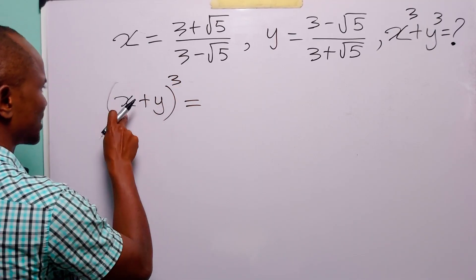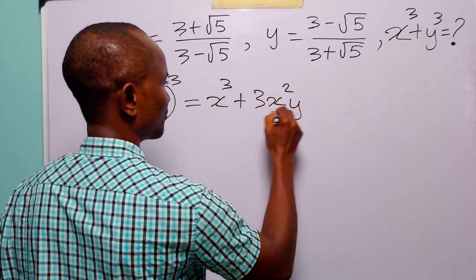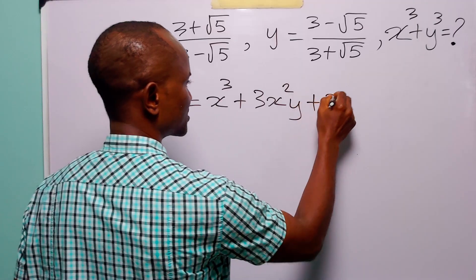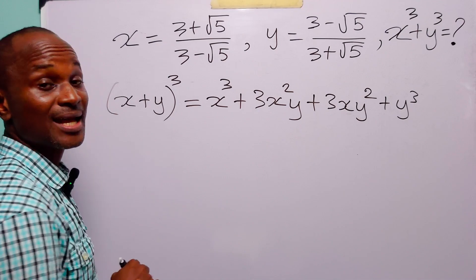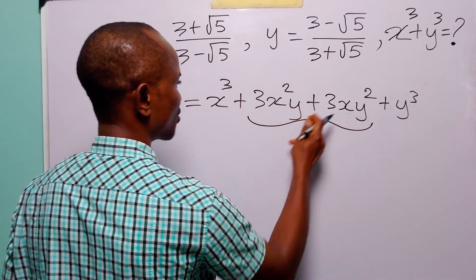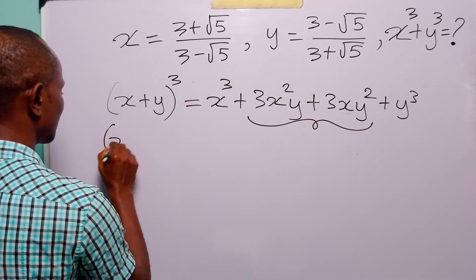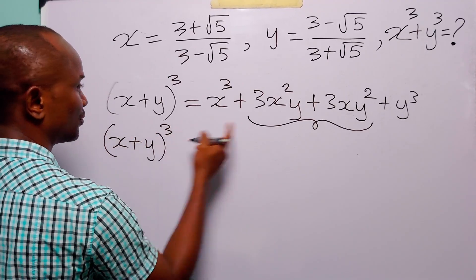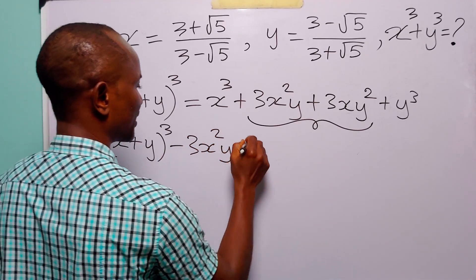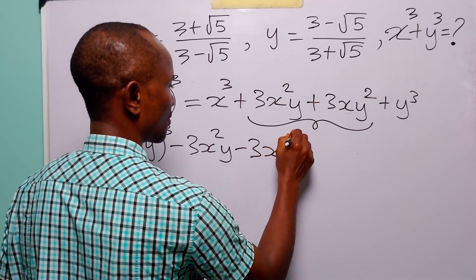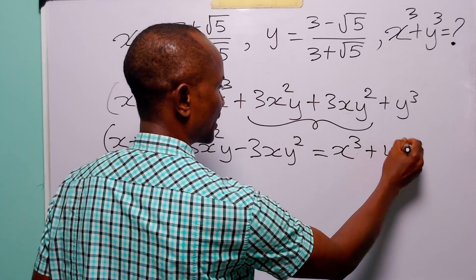When we open this bracket, we have x cubed plus 3x squared y plus 3xy squared plus y cubed. The next thing we are going to do is to take these two middle terms over to the left-hand side of the equation. When we do that, we have x plus y cubed minus 3x squared y minus 3xy squared is equal to x cubed plus y cubed.